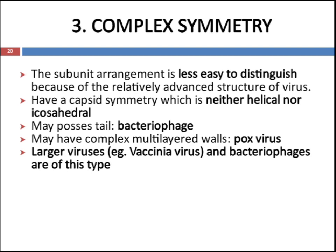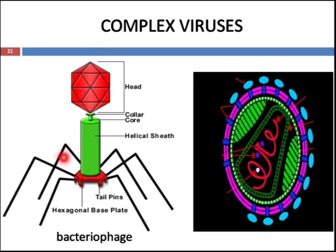The third symmetry is complex symmetry, in which the subunit arrangement is less easy to distinguish because of the relatively advanced structure of the virus. These viruses have capsid symmetry that is neither helical nor icosahedral; they may possess tails like in bacteriophages and may have complex multi-layered walls like in poxvirus. Large viruses like vaccinia virus and bacteriophage are examples of this type. A bacteriophage has an icosahedral symmetrical head, a helical sheath, a collar, a core, and a base plate with tail pins and a hexagonal base plate.